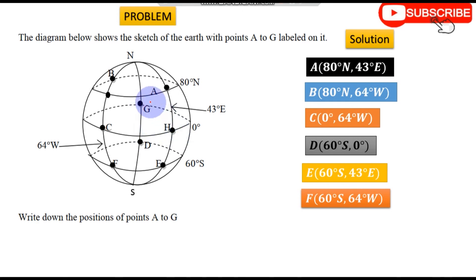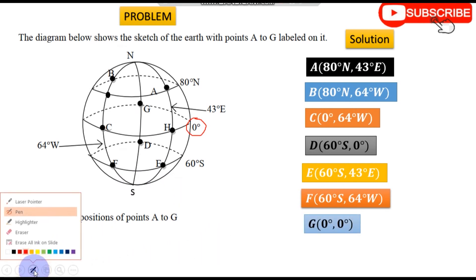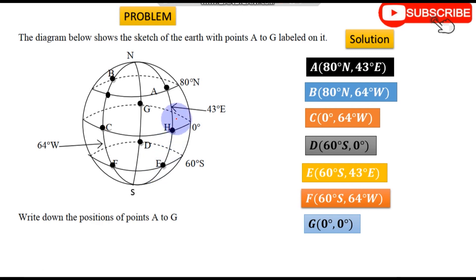For point G, this is a continuation of latitude zero degrees, so G is on zero degrees. The longitude — G is seated on the Greenwich Meridian, which is zero degrees as well. So G is zero degrees, zero degrees. Point H is seated on latitude zero degrees, and looking at the longitude for H — zero degrees as well.